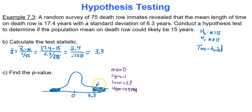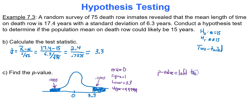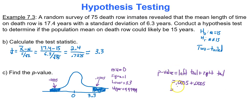The right tail area is 0.0005. Because of symmetry about 0, the left tail area is also 0.0005. Since this is a two-tailed test, the p-value is the sum of the left tail and right tail: 0.0005 plus 0.0005, or just 0.0005 times 2. The p-value for this test is 0.001.